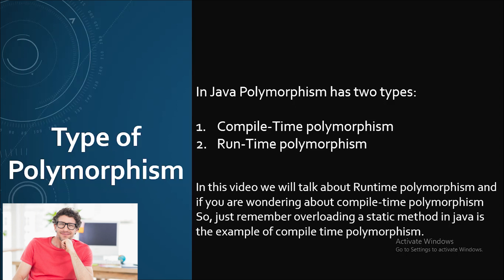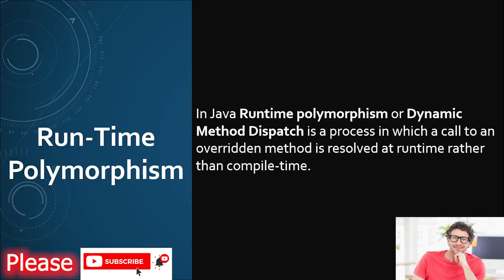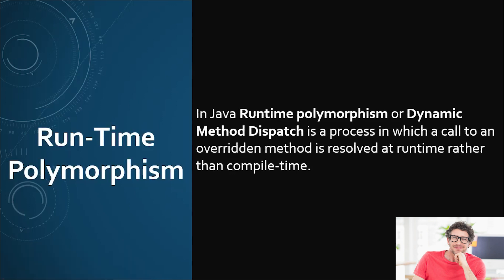Let's go ahead and see what is runtime polymorphism. In Java, runtime polymorphism is also known as dynamic method dispatch. It is a process in which a call to an overridden method is resolved at runtime rather than compile time, which means the decision of which method to execute is made at runtime rather than compile time.